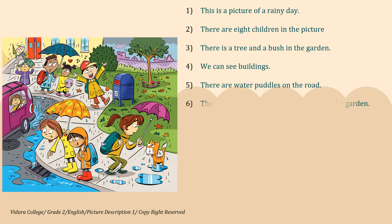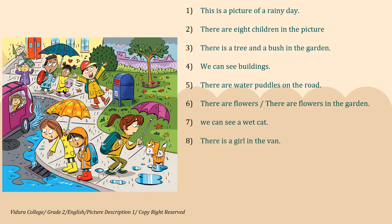Then number six: there are flowers in the garden. You can write one of them. Number seven: we can see a wet cat. Eight: there is a girl in the van.